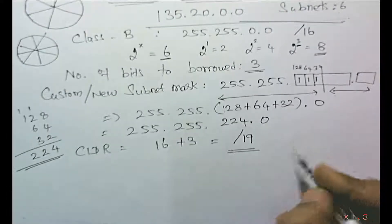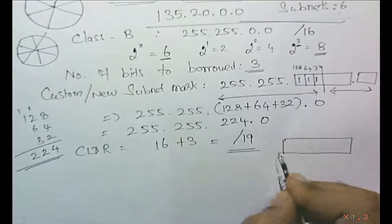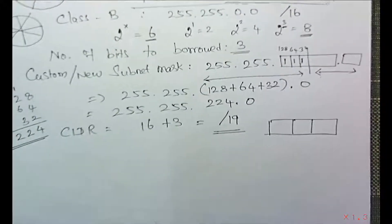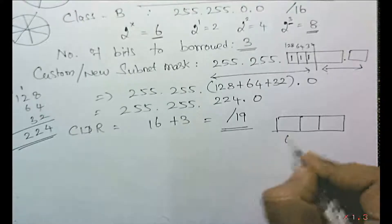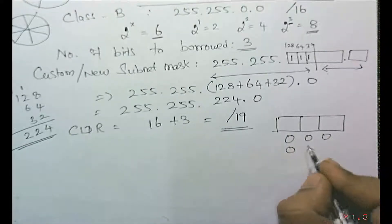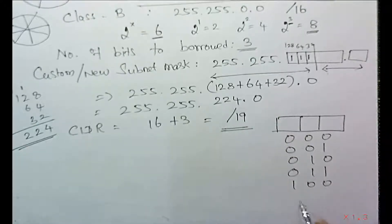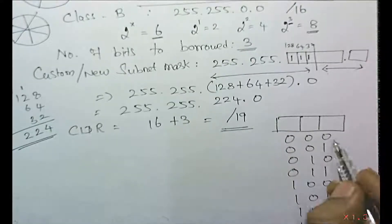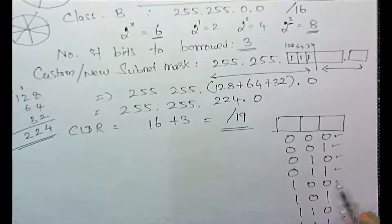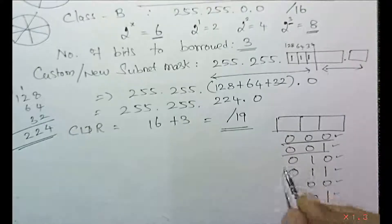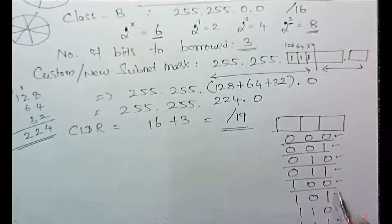Once you borrow 3 bits, the binary combinations are: 000, 001, 010, 011, 100, 101, 110, 111 — giving 8 possible subnets. For each subnet, we use one of these combinations in the subnet ID part.